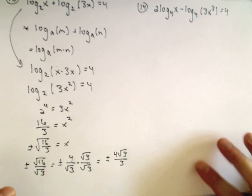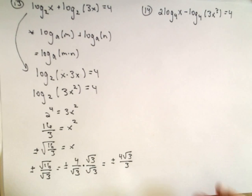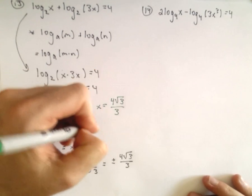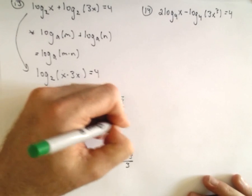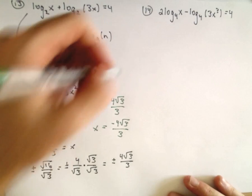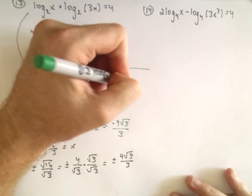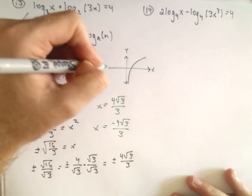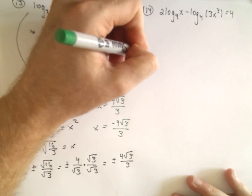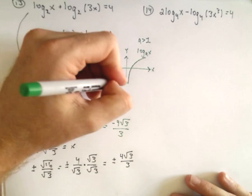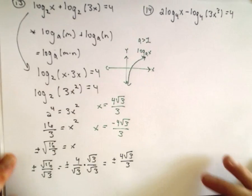Now, you can get extraneous solutions with logarithms. So this is one thing you have to check. Notice we've got two values here. We've got the solution of 4 root 3 over 3 and also negative 4 root 3 over 3. Recall that the domain of a logarithm, recall that that's what a logarithm looks like. So there's log base a of x. That's if the base is greater than 1. Just to remind you on graphing also real quick here.